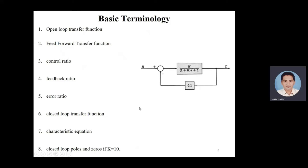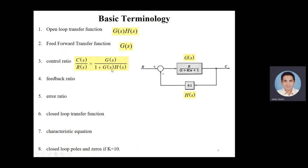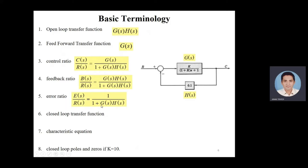Now let's understand the basic terminology. The open loop transfer function is G(s)*H(s). The forward transfer function is G(s). The control ratio c(s)/r(s) equals G(s) divided by [1 + G(s)*H(s)] for negative feedback. The feedback ratio b(s)/r(s) equals G(s)*H(s) divided by [1 + G(s)*H(s)]. The error ratio e/r equals 1 divided by [1 + G(s)*H(s)]. The closed loop transfer function c/r equals G divided by [1 + G(s)*H(s)]. The characteristic equation equals the denominator of the closed loop transfer function set to zero: 1 + G(s)*H(s) = 0.